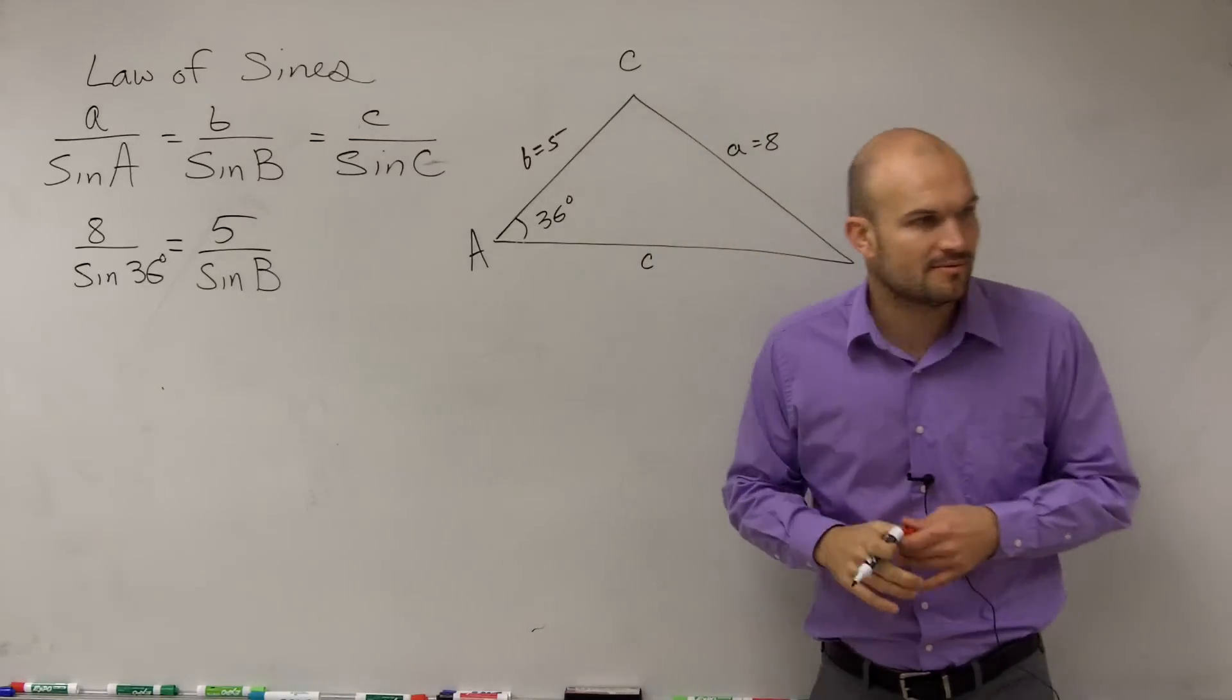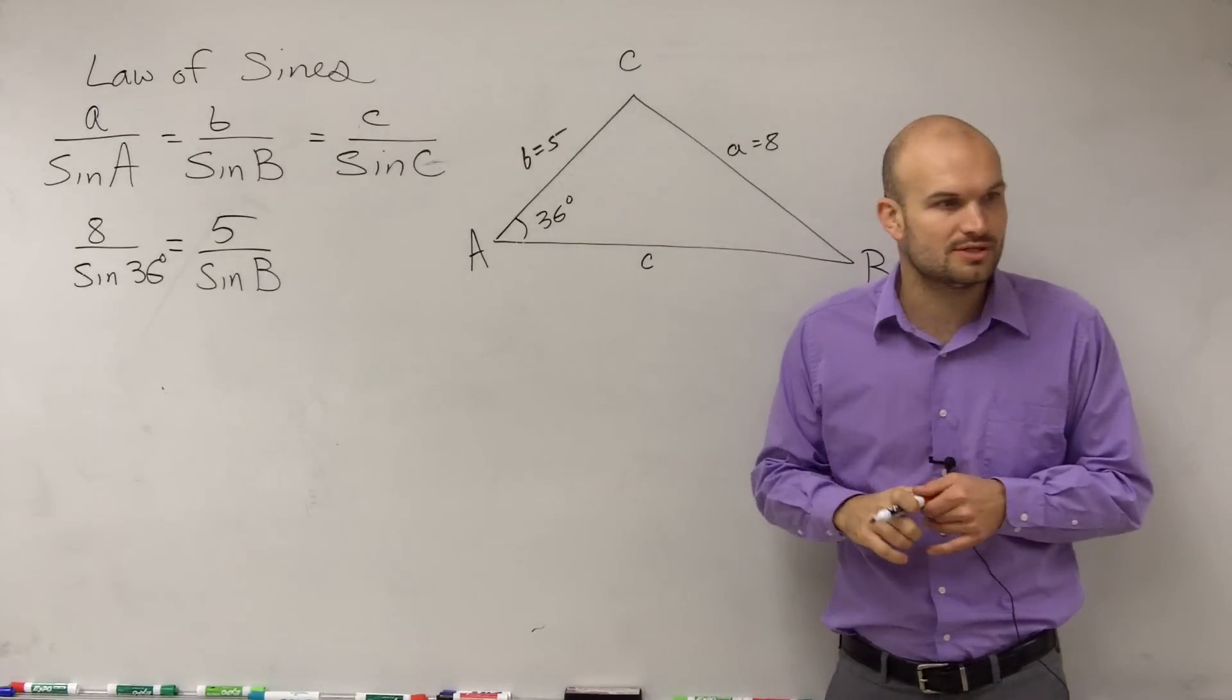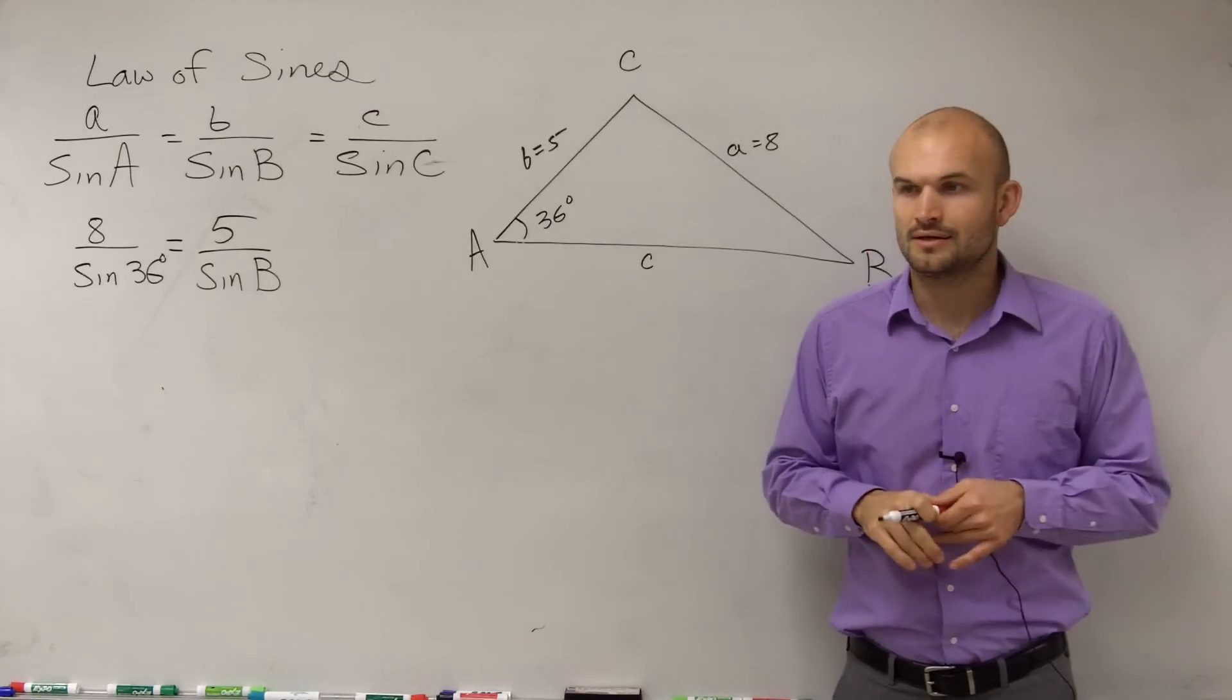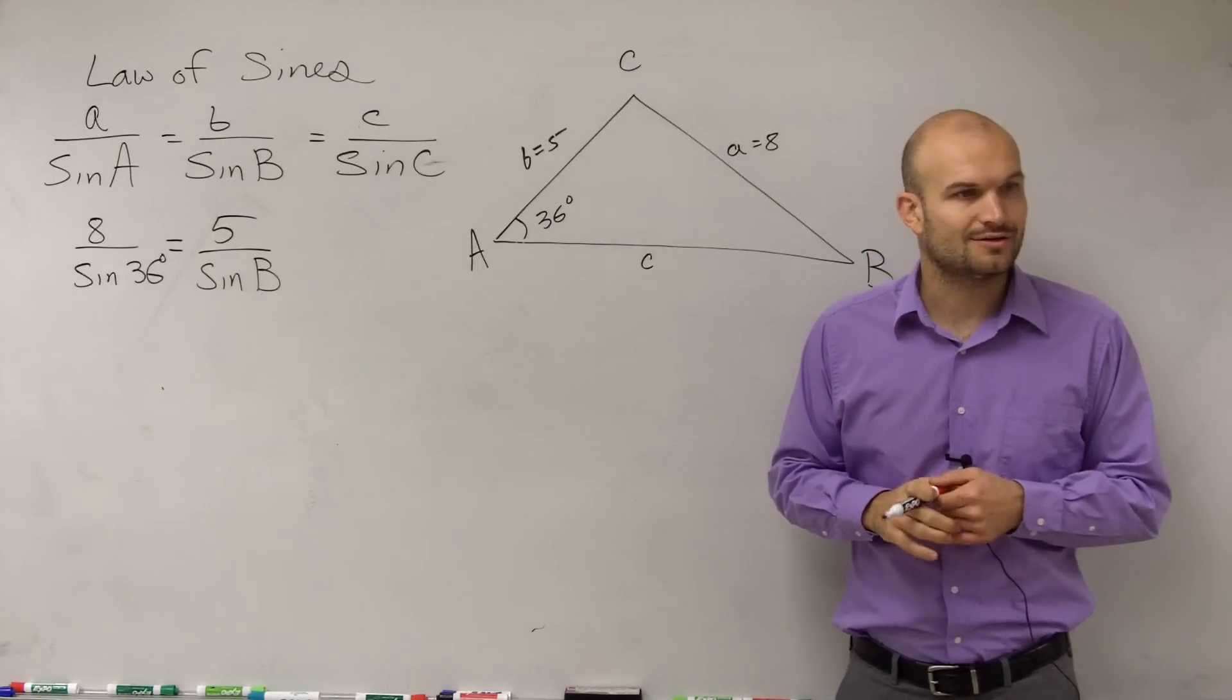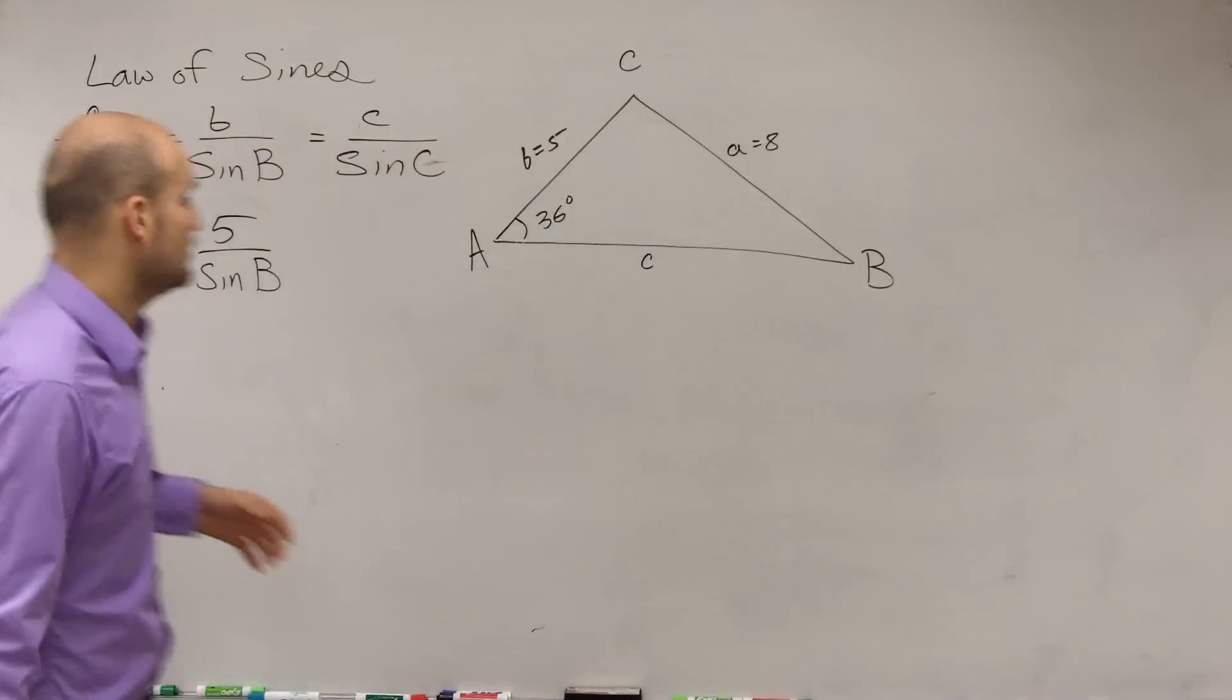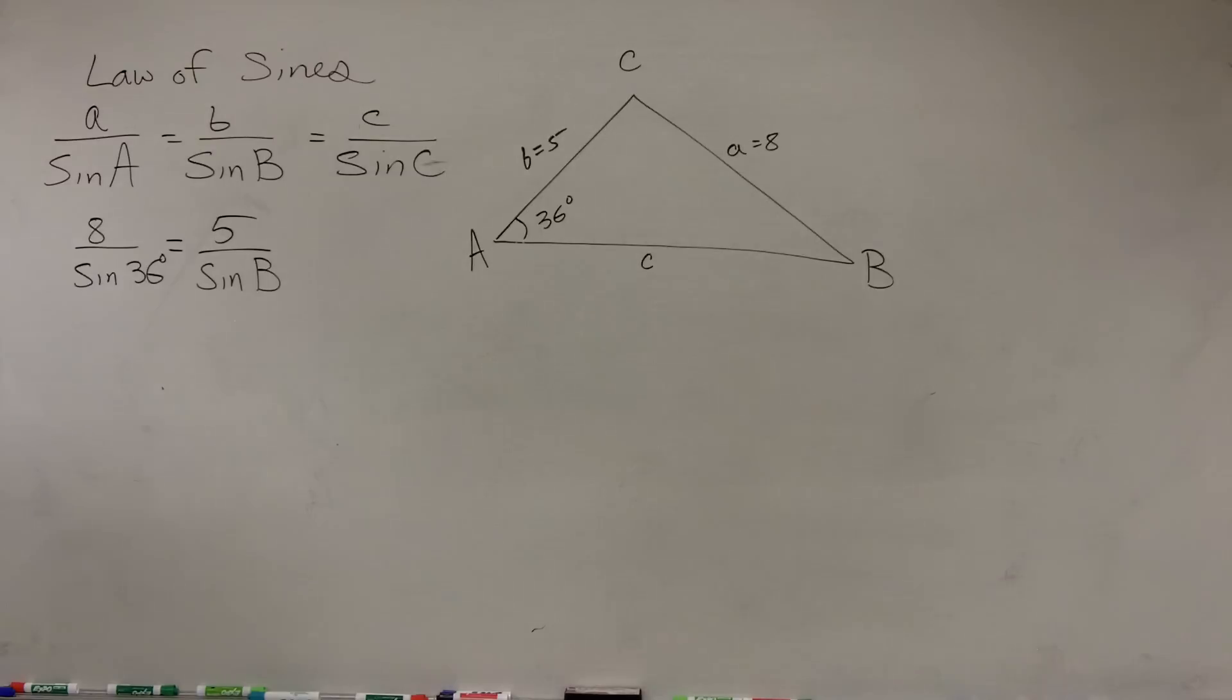So when we have a proportion, does everybody remember what we do to solve proportions? First step, we need to find the value of B—uppercase B, the angle. Does anybody remember our proportions? One thing, you've got to isolate the sine of B. So you've got to get sine of B off the bottom.